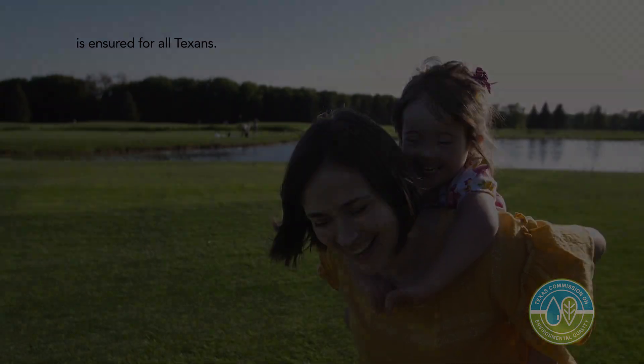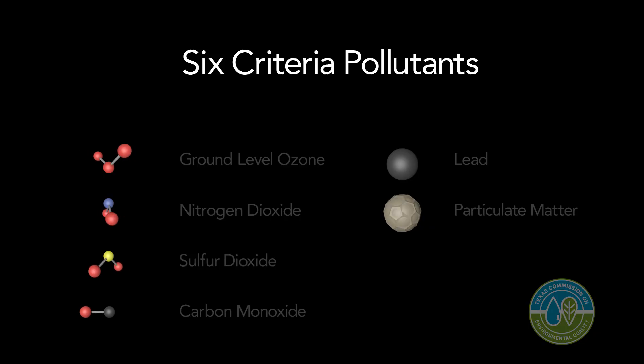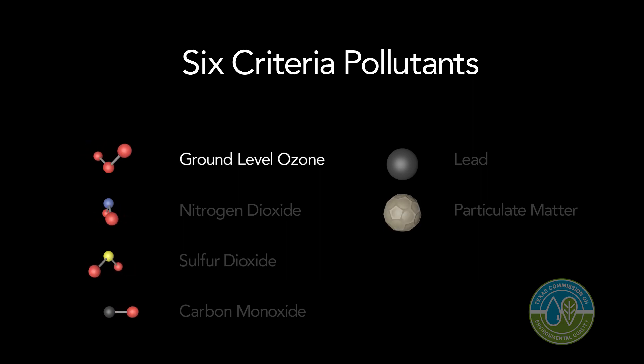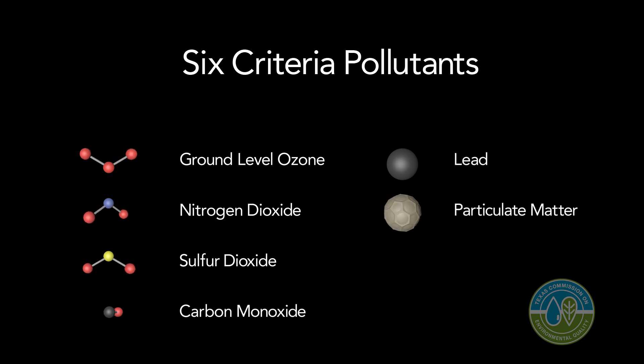The Clean Air Act was established and sets up the National Ambient Air Quality Standards, also known as the NAAQS, and criteria pollutants. Continuous air monitoring sites, otherwise known as CAMs, can be found across the state. The six criteria pollutants which are monitored include ozone, nitrogen dioxide, sulfur dioxide, carbon monoxide, lead, and particulate matter.